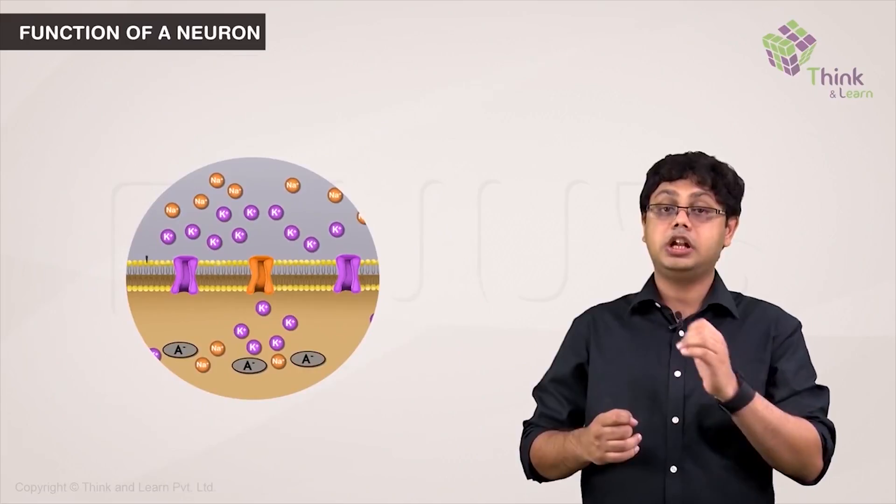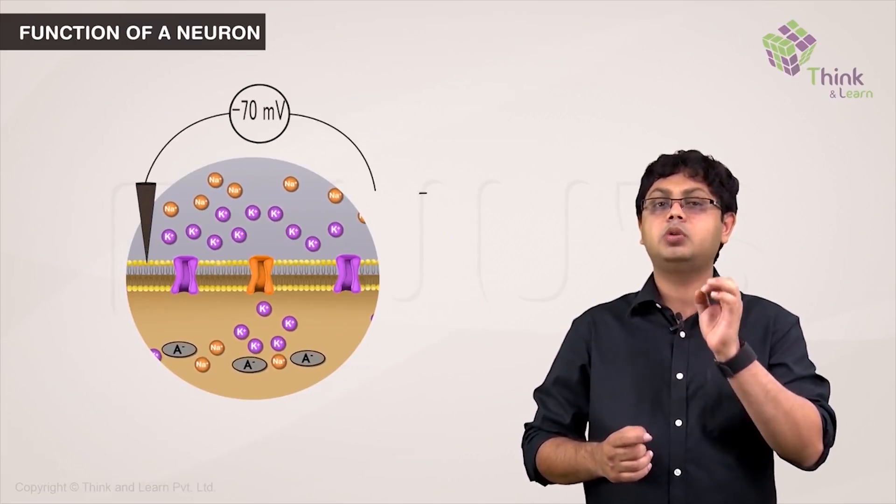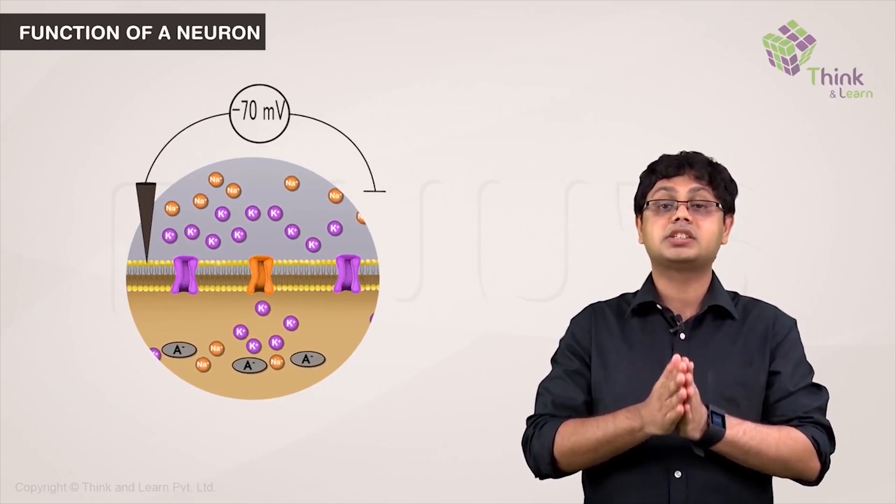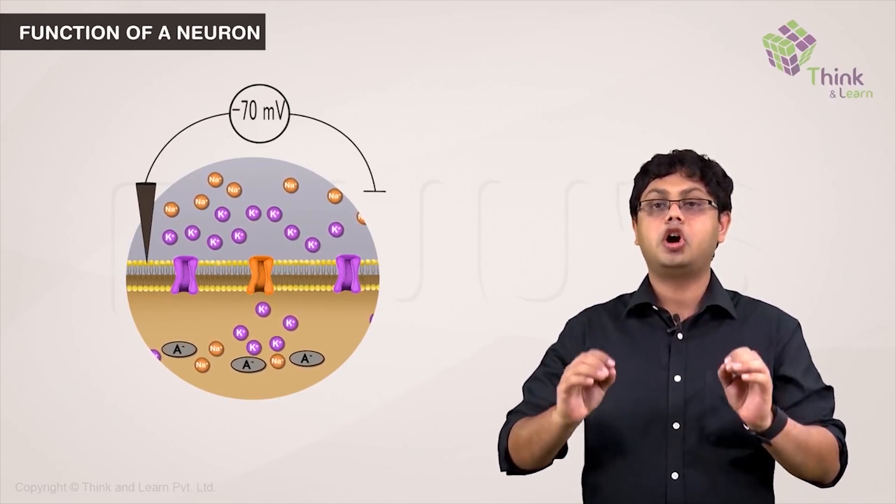This state of electrochemical equilibrium exists at about minus 70 millivolts. And therefore, it is the resting membrane potential of all neurons.